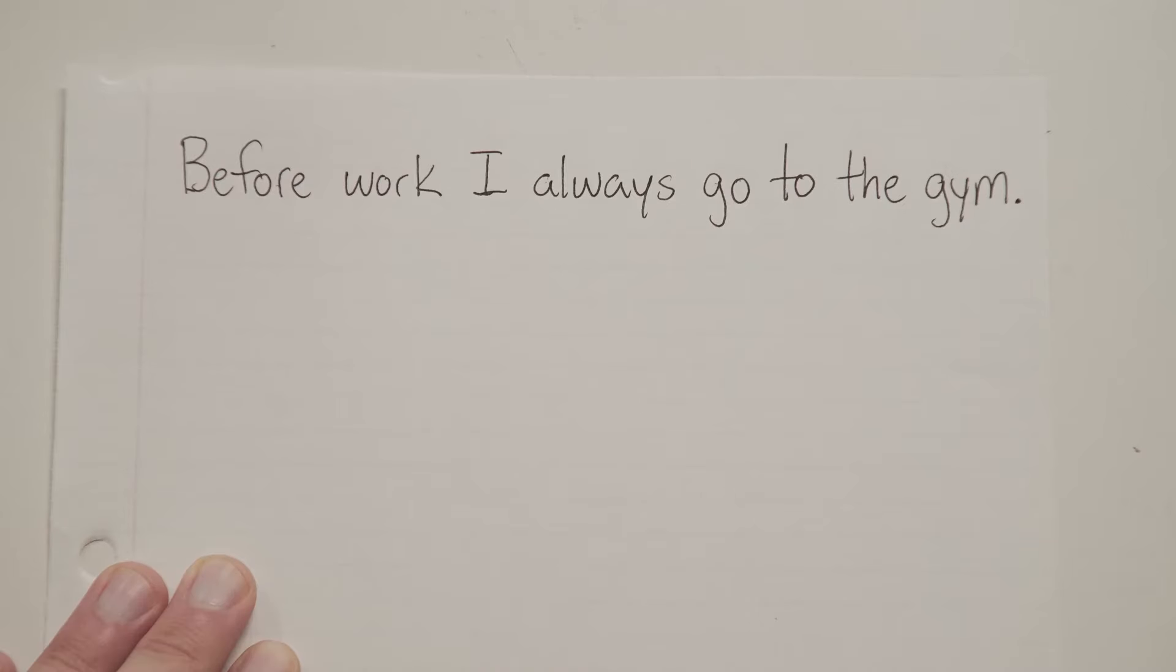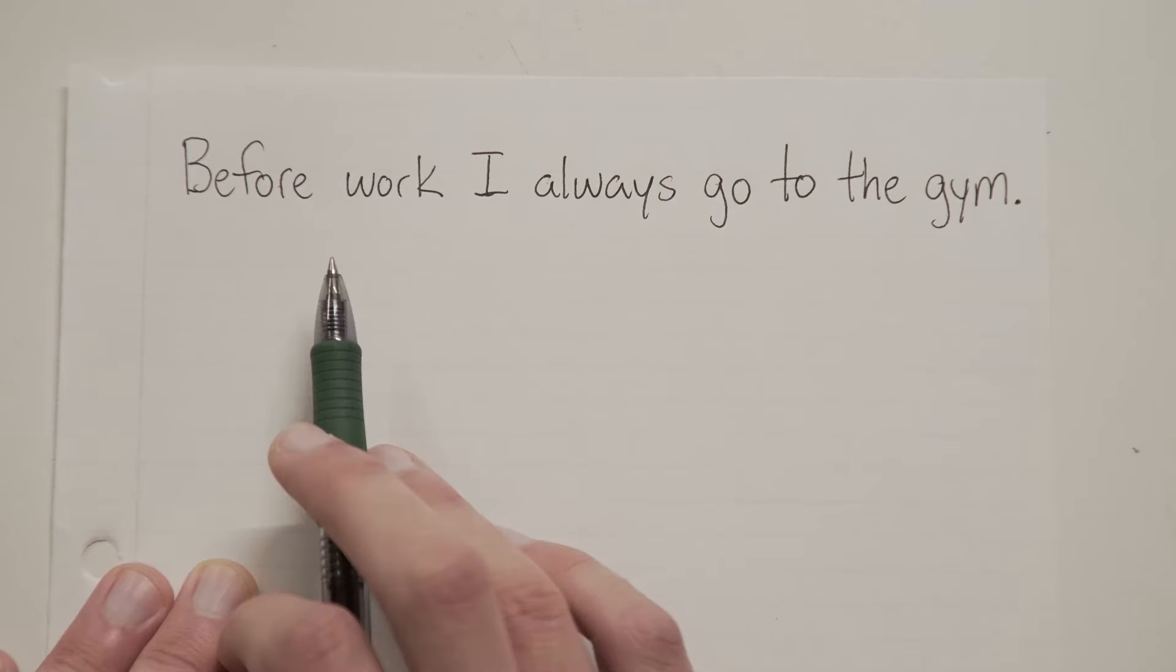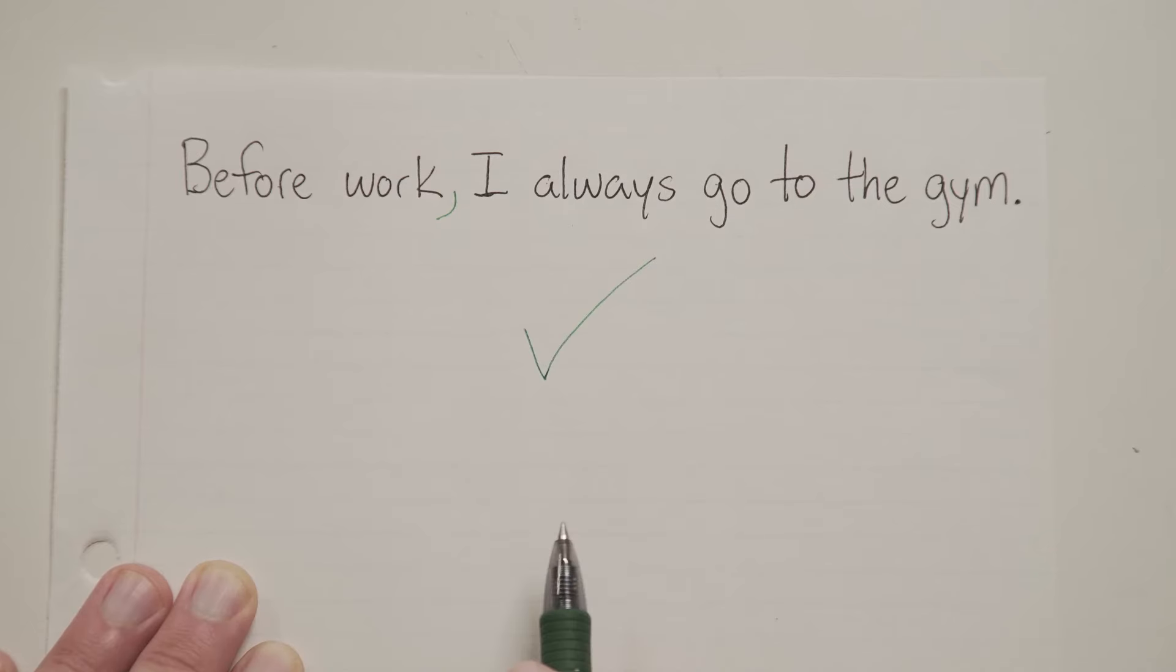Before work, I always go to the gym. Now the real sentence here is, I always go to the gym. The phrase before work just gives us a bit more information about the sentence. It's a setup. It's an introduction. So what do we do? Simple. We just put a comma after it. After the word work.